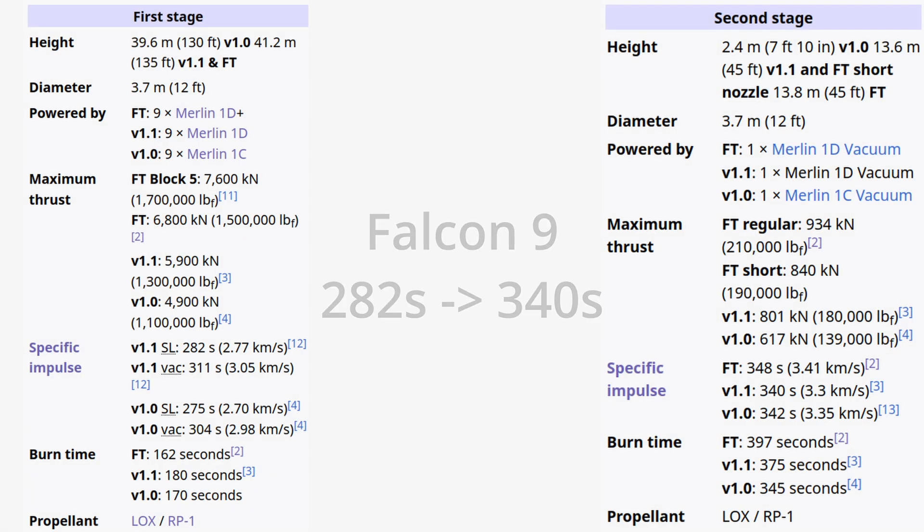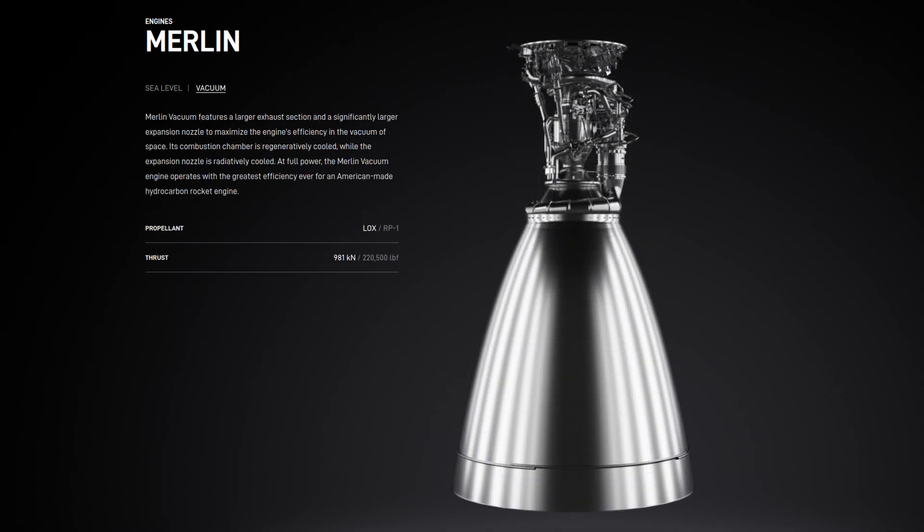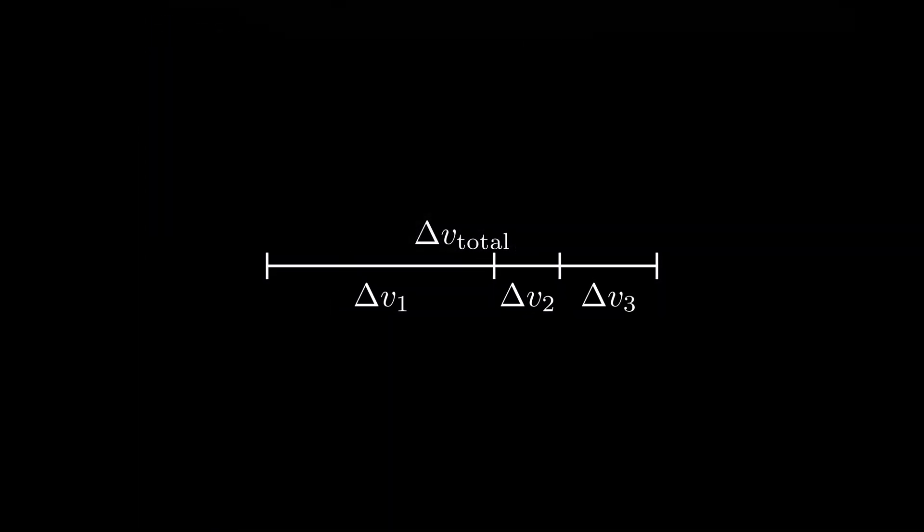One final thing to cover is what if the engine ISPs do in fact change from stage to stage? This is actually extremely common for rockets that start in atmosphere, as you can optimize lower stages for better thrust in dense atmosphere, while upper stages can exploit the reduced ambient pressure for better efficiency. But how should you split the delta Vs between stages?